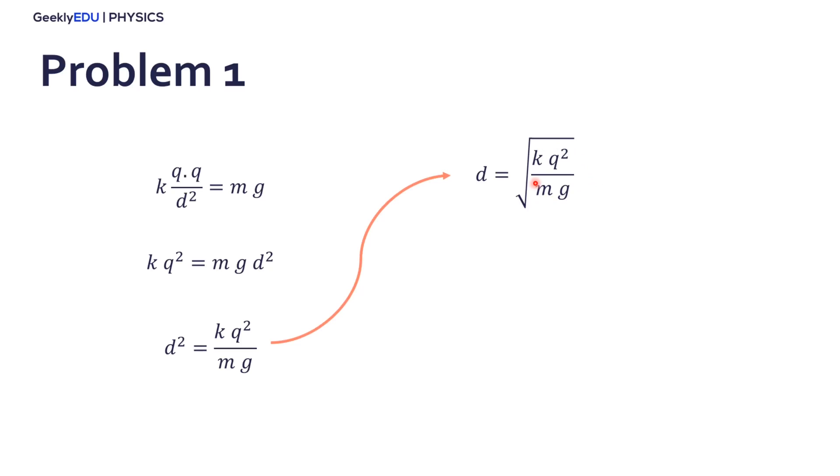Now we know the constant, we know the charge, the mass, and the gravity acceleration. You just can insert the values here, and find that the distance for them, for the forces to be equal, is 0.1186 meters.